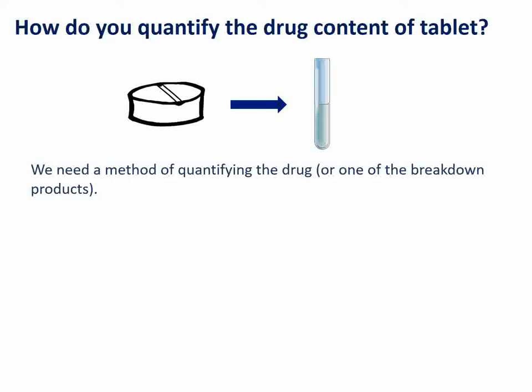Of course, what we also need to consider is that there might be things present in that tablet which could interfere with our method of analysis. Those interfering substances could just be other excipients — non-active ingredients in the tablet — or they could actually be products of the breakdown which interfere with the drug itself.